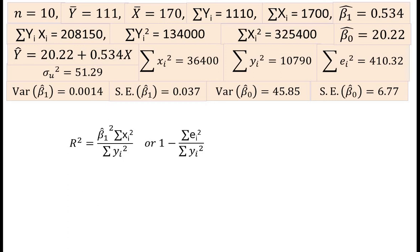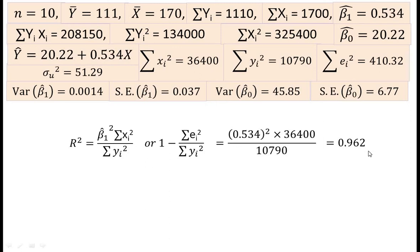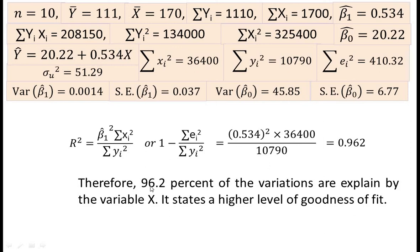Now, R², the coefficient of determination, equals (β₁ cap)² times summation small xi² divided by summation small yi², or equivalently 1 minus summation ei² divided by summation small yi². The value of R² is found to be 0.962. Therefore, 96.2% of the variations are explained by the variable x, indicating a higher level of goodness of fit.